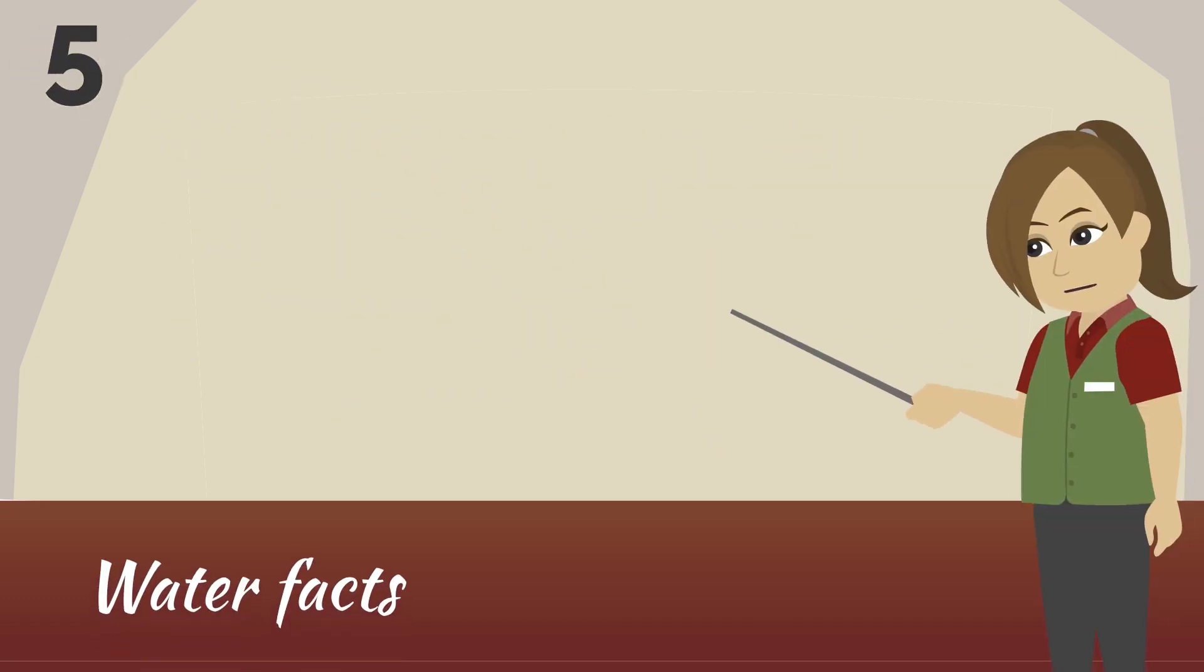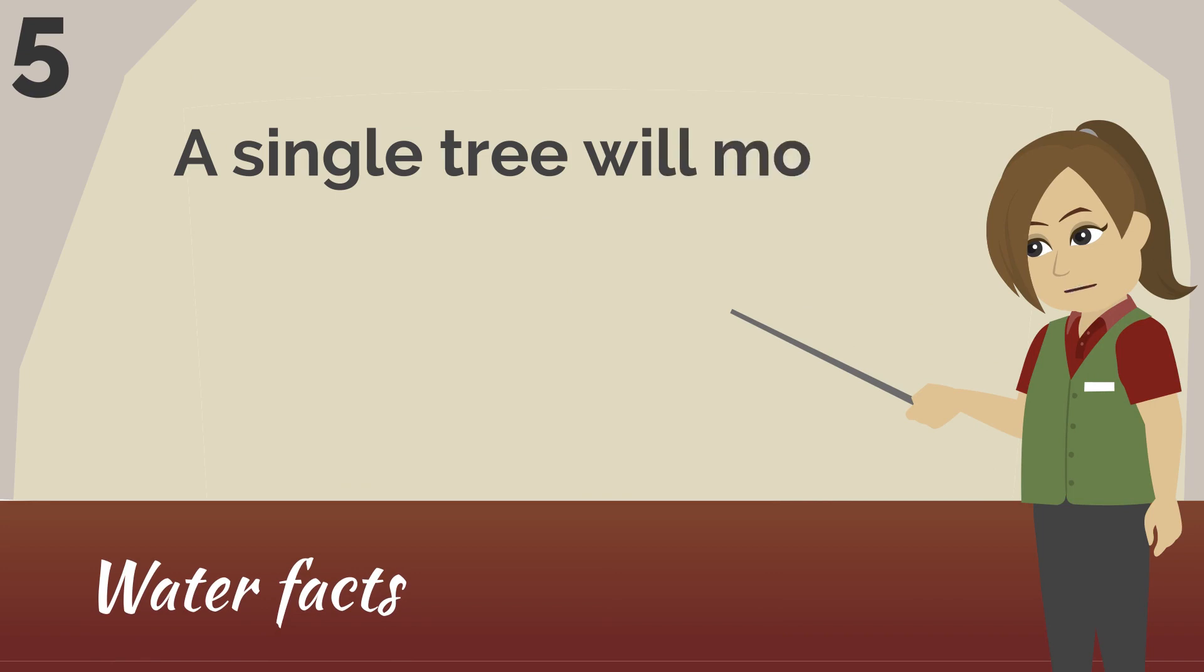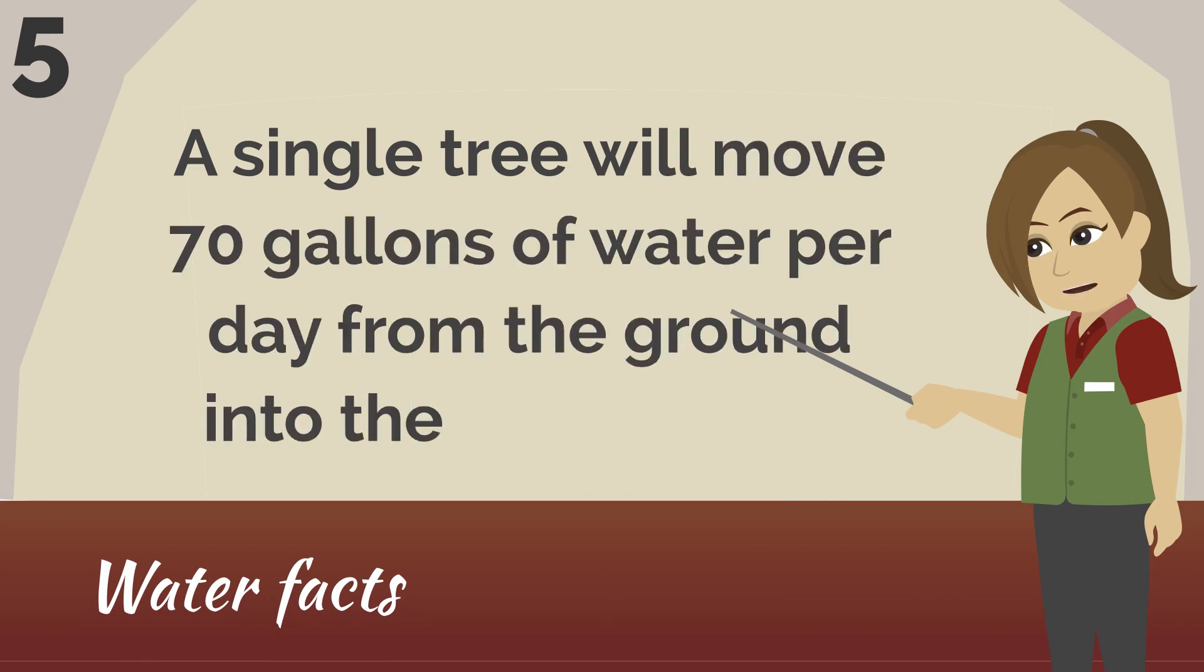Number 5. A single tree will move 70 gallons of water per day from the ground into the atmosphere.